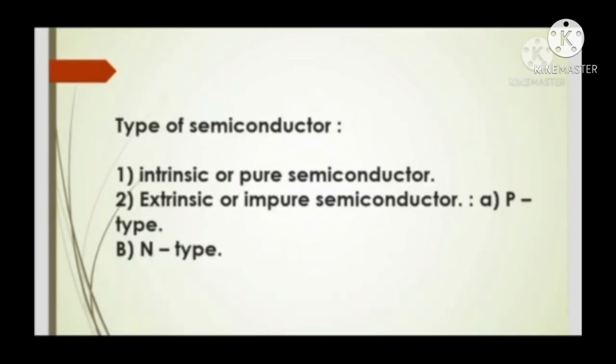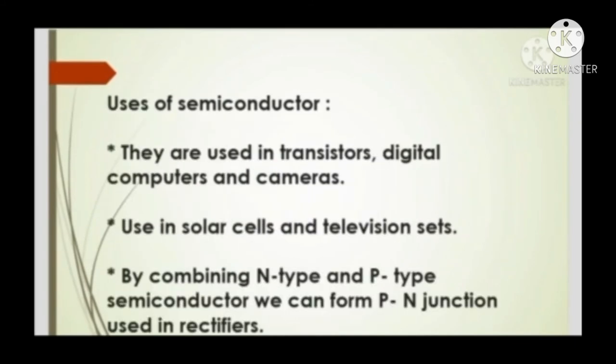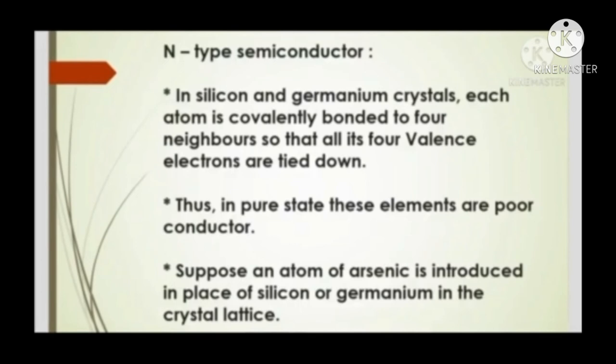Types of semiconductor: Intrinsic or pure semiconductor, and extrinsic or impure semiconductor. Impure semiconductor is of two types: P-type and N-type. Uses of semiconductors: They are used in transistors, digital computers, cameras, solar cells, and television sets. By combining N-type and P-type semiconductors, we can form a P-N junction used in rectifiers.